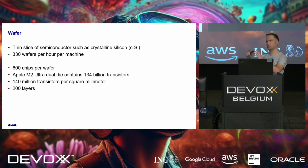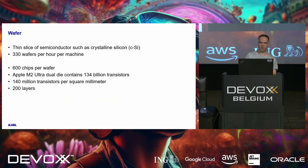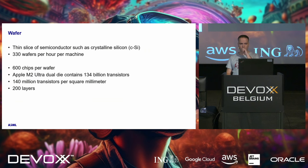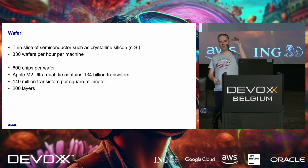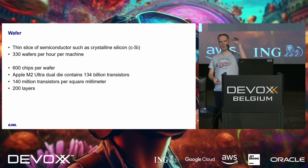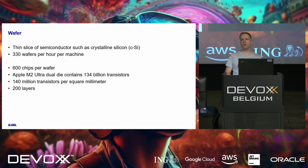That wafer is used to create chips on top of it. One machine can process about 330 wafers per hour. As we've seen, you can have about 600 chips on one wafer. The number of transistors — 140 million transistors on a square millimeter — is insane. Each chip is created of multiple layers, with multiple layers printed on top of it. Depending on the kind of chip, it can be more or less layers, up to about 200 layers printed on top of each other.